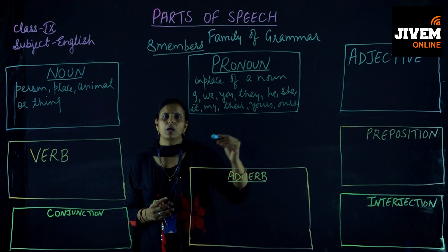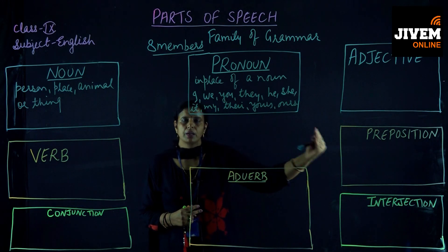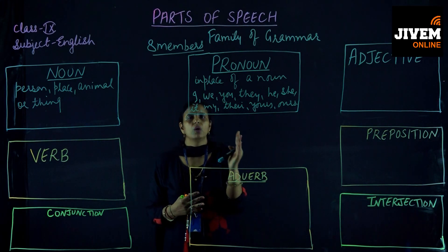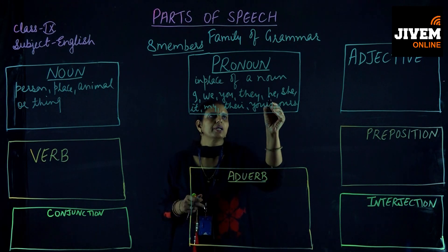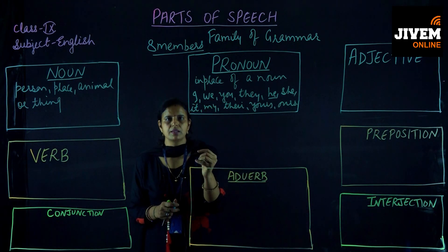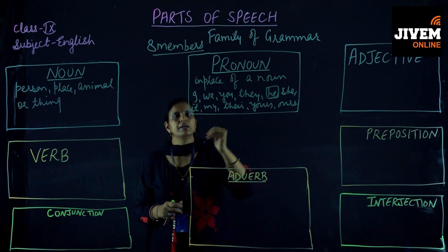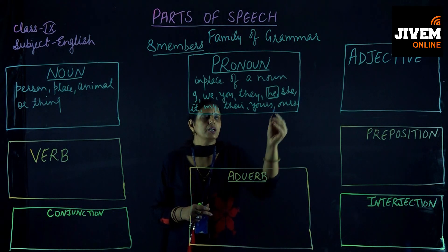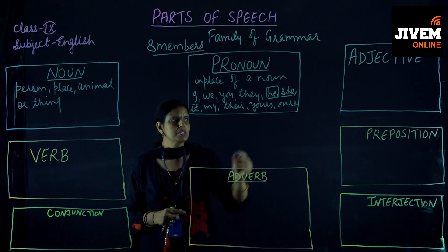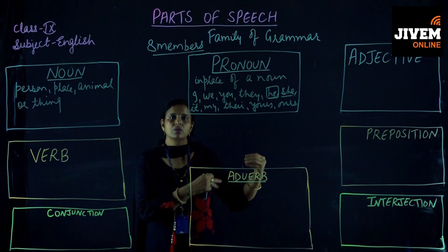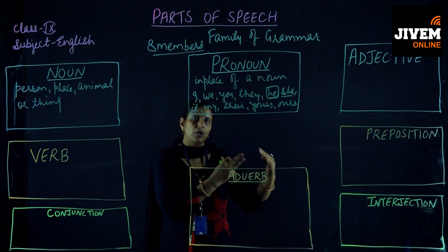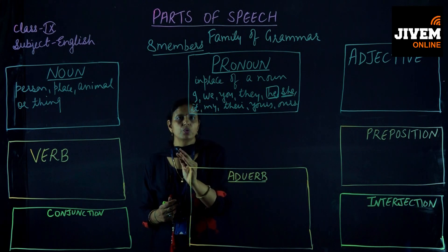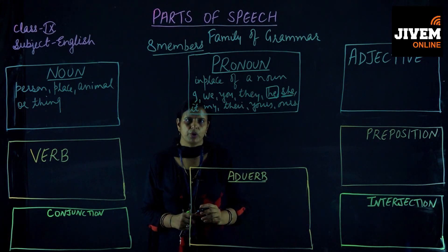For example, if I say: 'Ram is my friend, Ram is a very good boy, Ram lives near my house, Ram studies with me' — it will look odd. So instead of repeating Ram, we use a pronoun. Since Ram is male, we use 'he': 'Ram is my best friend, he studies with me, he lives near my house.' Similarly, for a girl, we use 'she': 'Sita is my best friend, she is very beautiful.' So the word used in place of a noun is known as a pronoun.